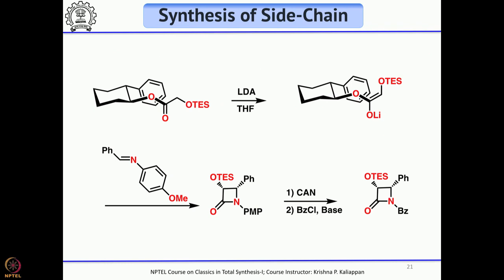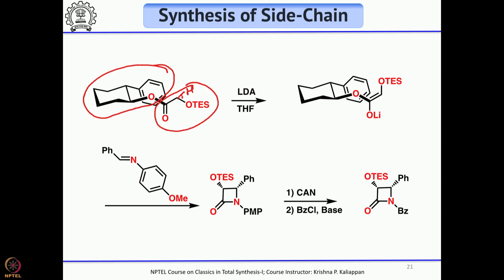The side chain was made from a chiral alcohol, specifically phenylcyclohexyl alcohol. Treatment with LDA abstracts a hydrogen and forms the enolate, which upon quenching with an imine forms the beta-lactam. The PMP (para-methoxyphenyl) group can be cleaved with CAN and then protected as a benzoyl chloride — the N-benzoylated beta-lactam is the one used to attach the side chain to Taxol.